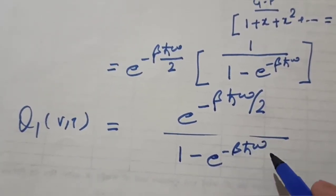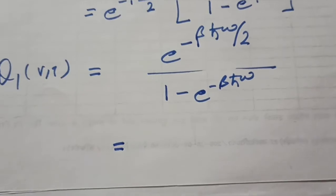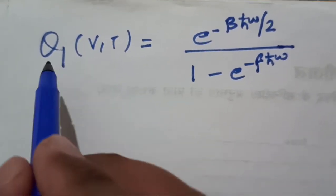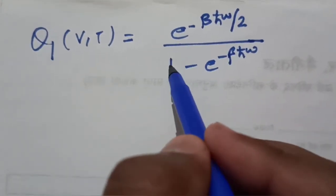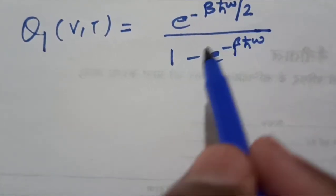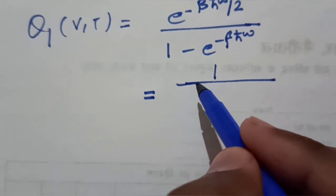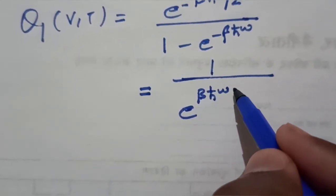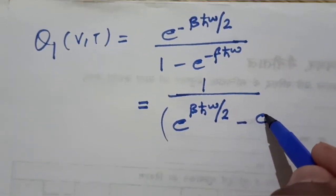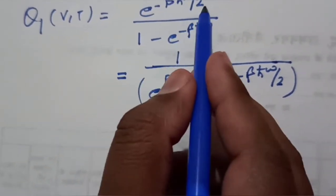Using this geometric series formula, Q1(V,T) equals e to the power of minus beta h-bar omega over 2, divided by (1 minus e to the power of minus beta h-bar omega). Dividing numerator and denominator by e to the power of minus beta h-bar omega over 2, we arrive at 1 over (e to the power beta h-bar omega over 2 minus e to the power minus beta h-bar omega over 2).